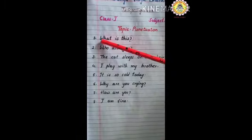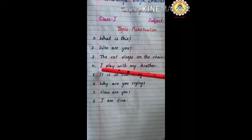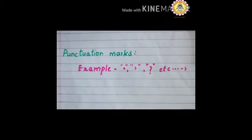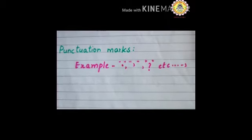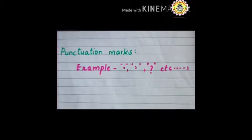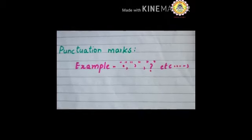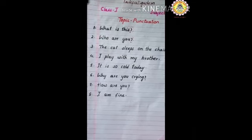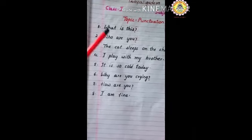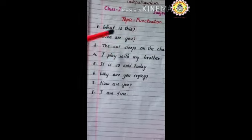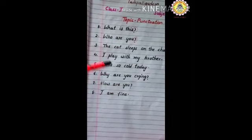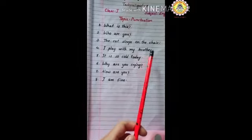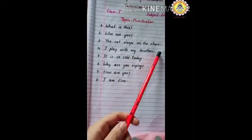In every sentence, the first letter must be a capital letter. Use punctuation marks to make the meaning of the sentence clear and easy to understand. Let us discuss about the question mark — it is a type of punctuation that must be used at the end of a question. The full stop is used at the end of a statement.